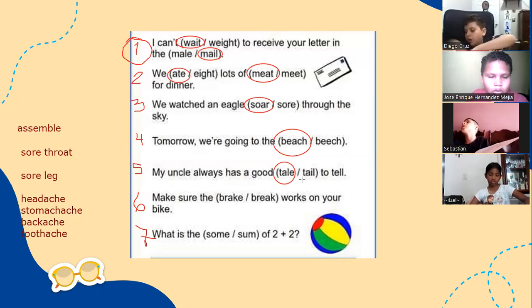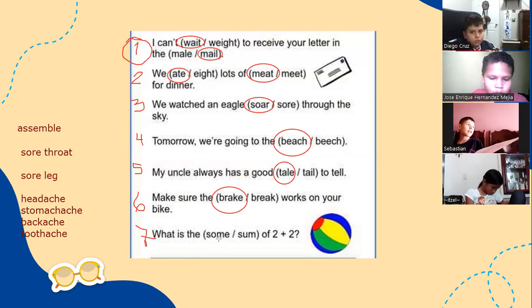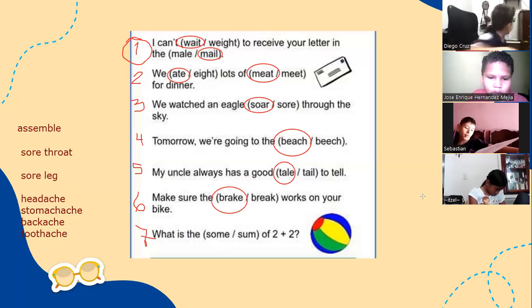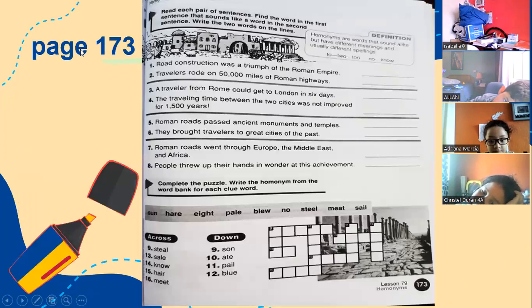Make sure the brake works on your bike. The first one? The second one. If I break this pencil apart, I make two pieces. What is the sum of two plus two? Two plus two is four. Yeah, but I'm asking for the word that goes here. Sum. Excellent. Okay, now let's work on page 173.